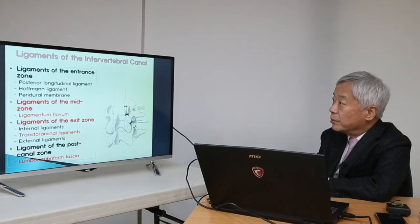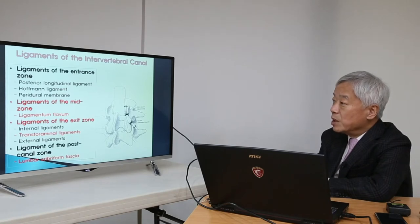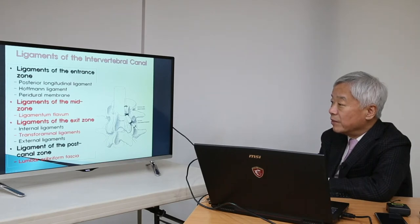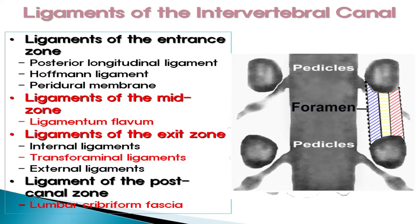This is the ligament of the intravertebral canal. In the entrance zone and mid-zone, you can find ligamentum flavum, and in the exit zone, you can find transforaminal ligaments. In the post-canal zone, there is lumbar fascia. As you can see, this is the pedicle here at the foramen level. You can divide this area into entrance zone, mid-zone, and exit zone.